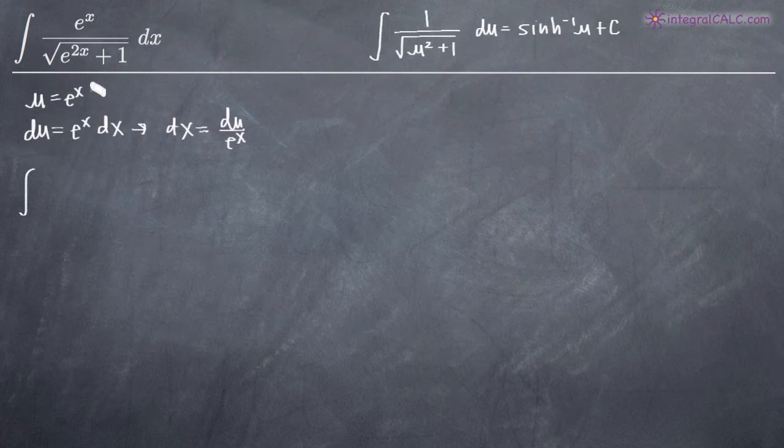We know that e to the x equals u, so we plug that in the numerator. Then in the denominator, we have e to the 2x plus 1. Well, e to the 2x, let's write that over here.